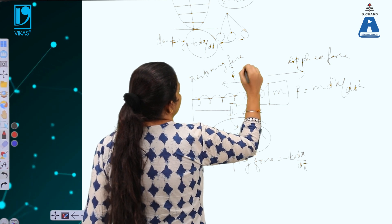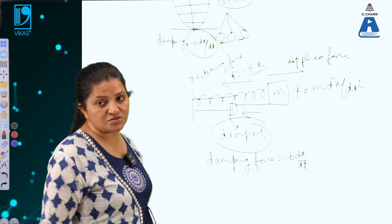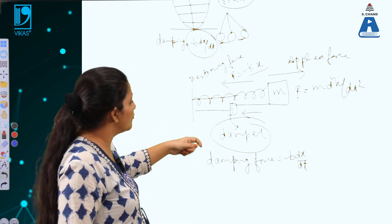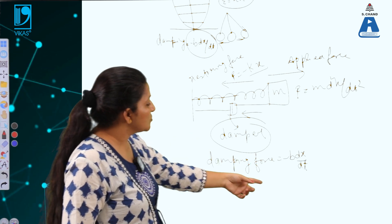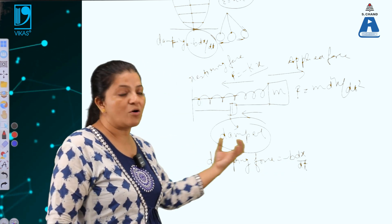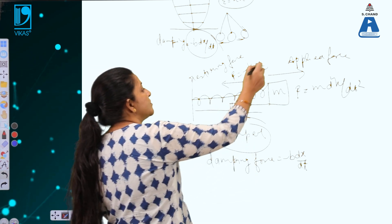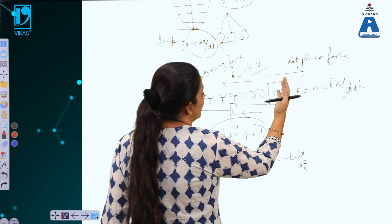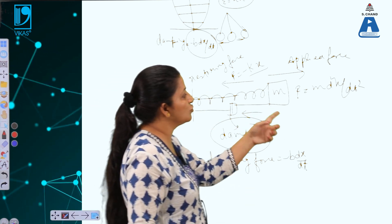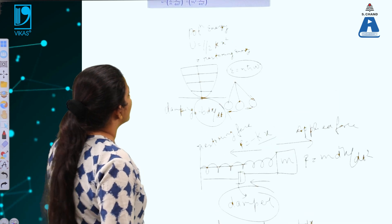There is also a restoring force acting in the backward direction, given by F = −kx, where k is the spring constant. This is the basic model behind the damped harmonic oscillator. The damping component −b(dx/dt) causes the body to lose energy over time and come to rest, while the restoring force −kx tries to bring the mass back to its original position.